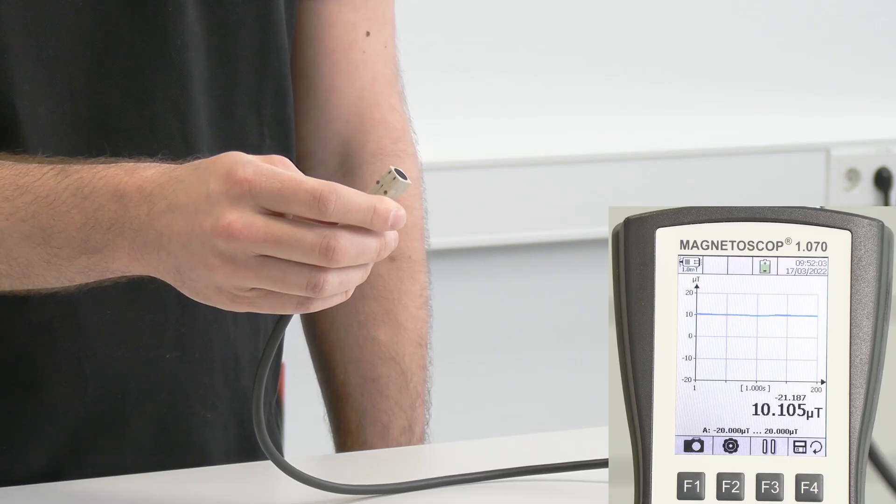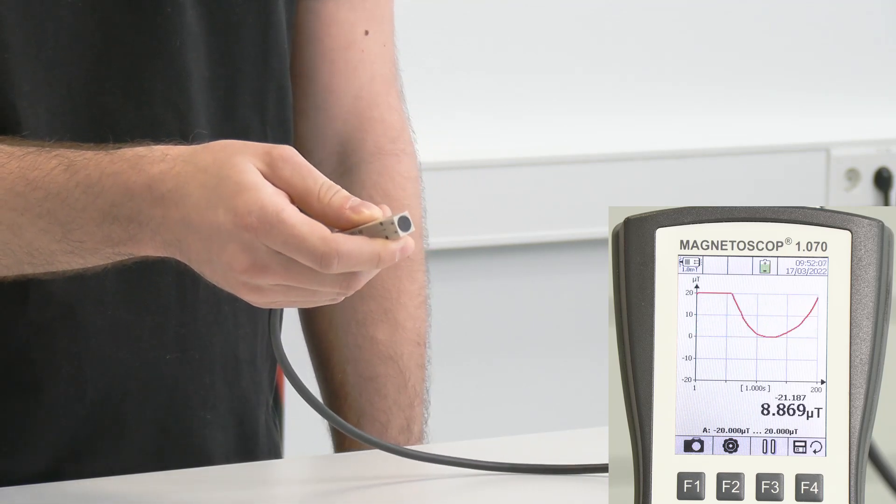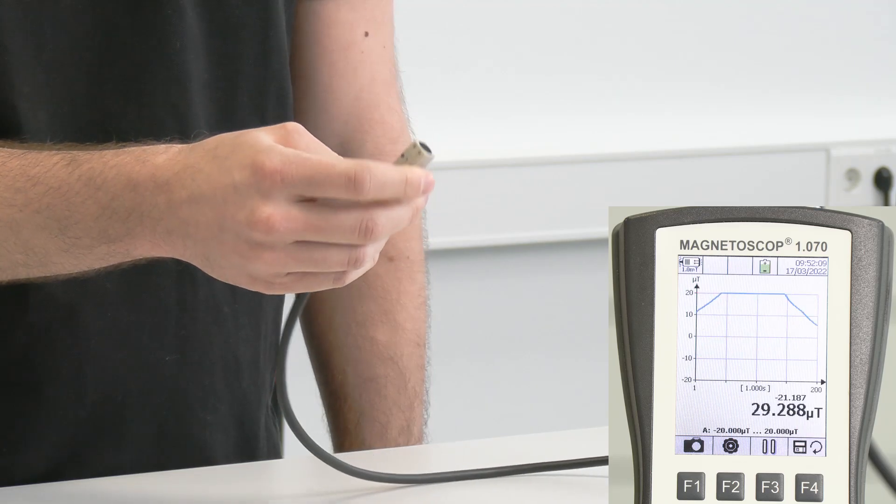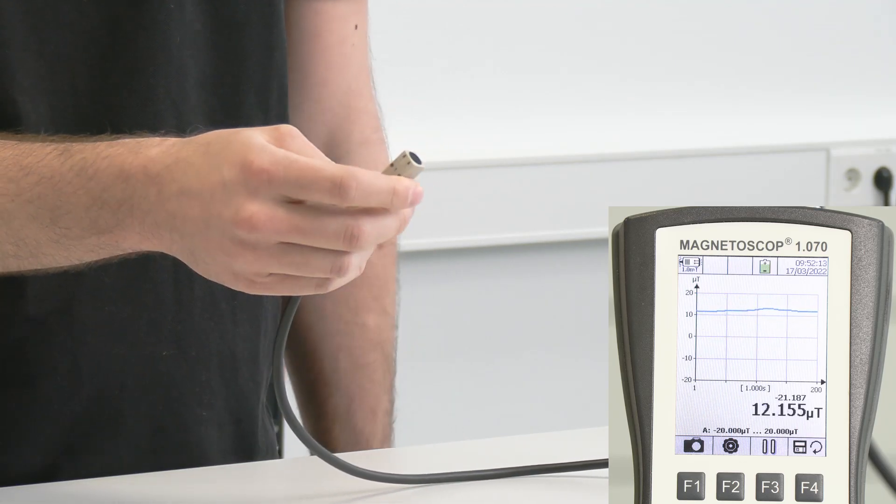When I hold the probe in my hand like this, the magnetic field signal changes all the time. We measure the earth's magnetic field and other static fields in different positions, so let's fix the probe.